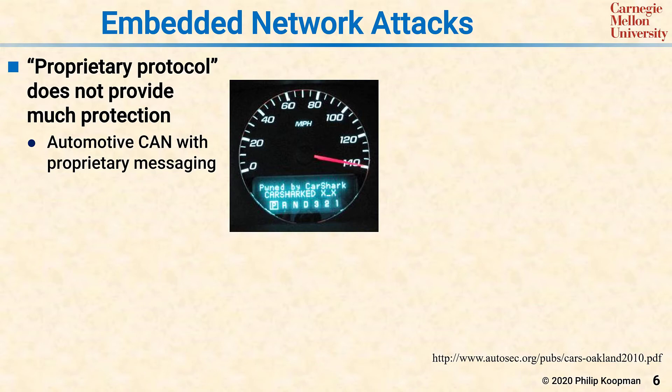A poster child for this is the automotive CAN network — controller area network. That network is customized by every car company with different types of messages. The theory is that if you keep secret the message dictionary, so you don't know which message does what, then an attacker won't be able to attack you.